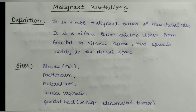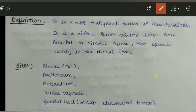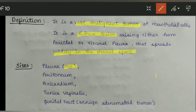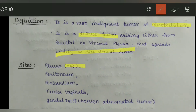Hello friends, welcome back to Shiji Classes. In this video I'm going to discuss malignant mesothelioma. First, the definition: it is a rare malignant tumor of the mesothelial cells. It is a diffuse lesion arising either from the parietal or visceral pleura that spreads widely in the pleural space. The sites are pleura most commonly, then peritoneum, pericardium, tunica vaginalis, and genital tract — where it is called the benign adenomatoid tumor.